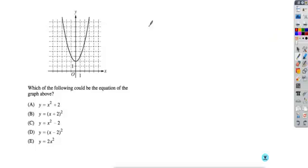In this problem, if you're unfamiliar with the parabola shape of an x-squared graph and its transformations, what you could do is simply plug in a point that you see.